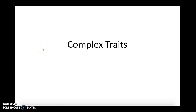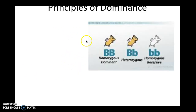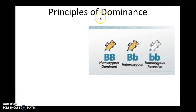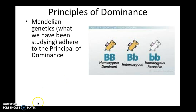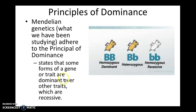Here is the lecture about complex traits. Everything that we've done so far is about principles of dominance. Some traits are dominant over other traits. We also call this Mendelian genetics, which adheres to the principles of dominance.